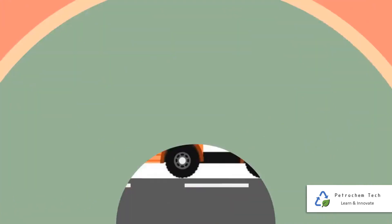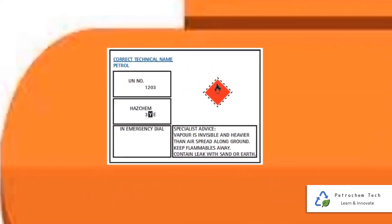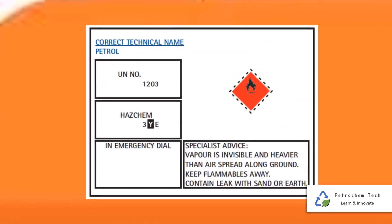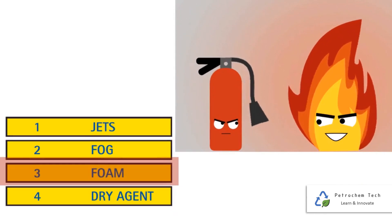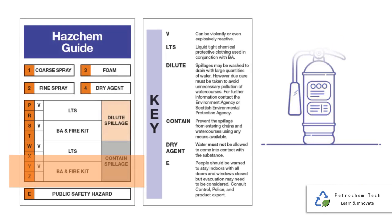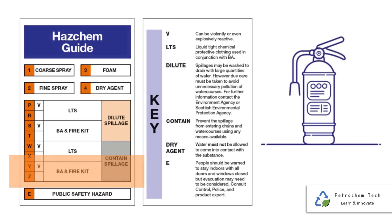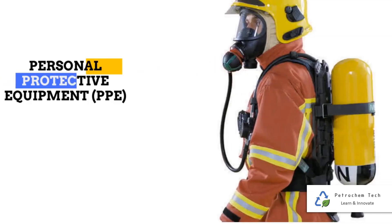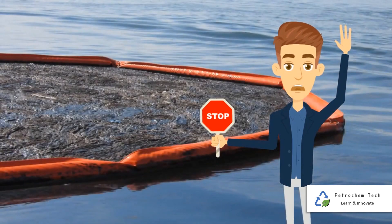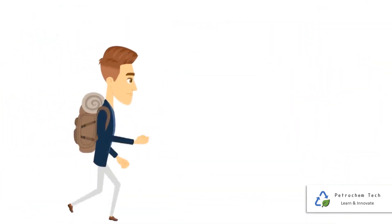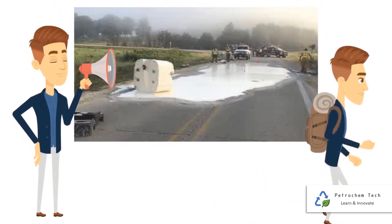For motor spirit with UN number 1203, the Hazchem Code is 3YE. This means: 3 - use of foam only; Y - can be violently reactive or explosive, breathing apparatus plus protective gloves to be used in case of fire; the personal protective equipment is not a requirement in case of spillage; any spillage of the substance should be contained; E - consider evacuation as a first priority.